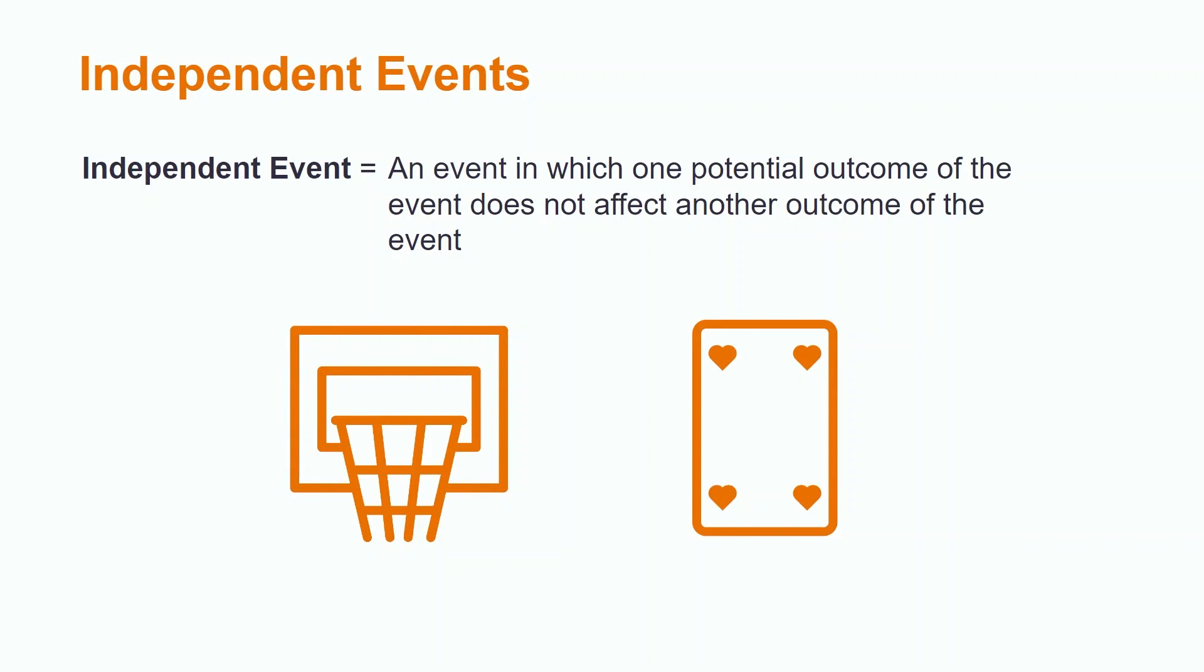Events are considered to be independent if one potential outcome of an event does not affect another outcome of the event. For example, if we are shooting two foul shots, missing the first shot has no impact on whether or not we make or miss the second shot.